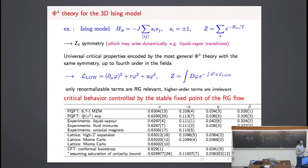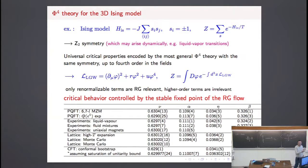These are the critical exponents. Nu is the exponent associated with the diverging correlation length. Alpha is the specific heat exponent related to the diverging behavior of the specific heat. Eta is related to the behavior of the two-point function at the critical point — it describes the power-law behavior and the deviation from a Gaussian. Beta is the exponent associated with the magnetization. Only two of them are independent; using scaling relations, you can relate all exponents to just two.